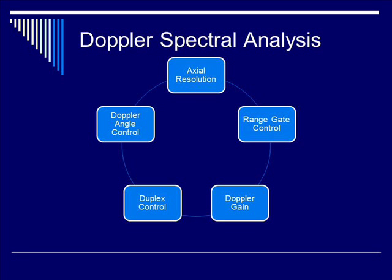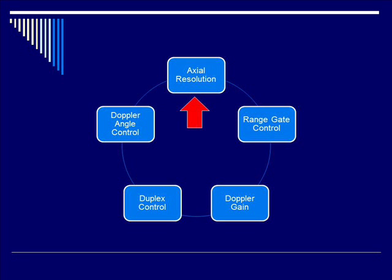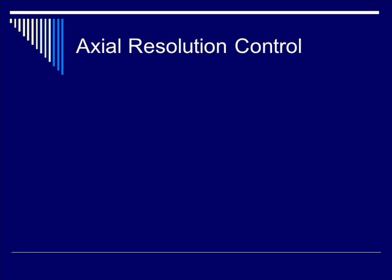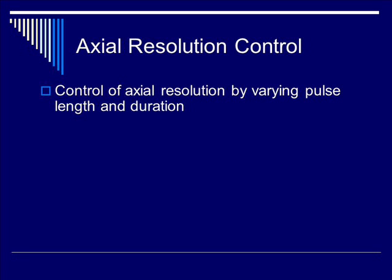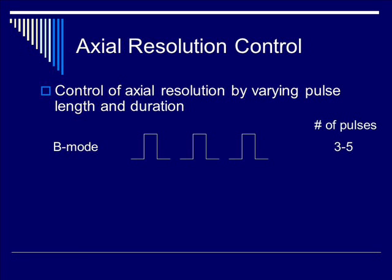There are five aspects of Doppler spectral analysis that I'd like to discuss in this segment. They include axial resolution, range gate control, Doppler gain, duplex control, and Doppler angle control. Let's talk about axial resolution — specifically, how do you modulate or control the axial resolution? Note from previous discussions that the control of axial resolution can be achieved by varying the pulse duration, or pulse length.